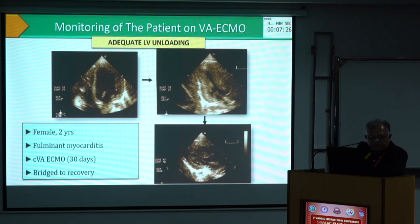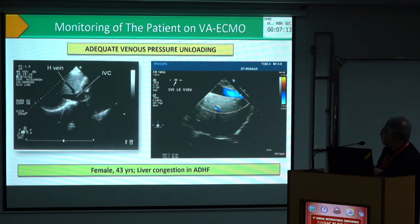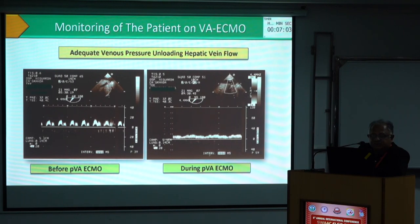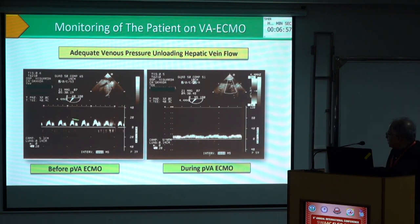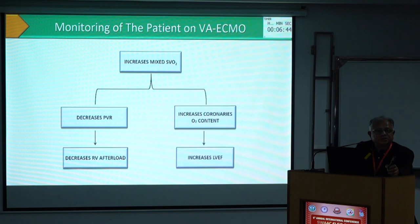This is the hepatic vein and IVC. You can look at the flow of the cannula and venous pressure, which should be adequate but not too much — otherwise you will see venous congestion and the IVC was not collapsing. Adequate venous pressure, unloading the hepatic vein flow: you can put a Doppler there and see it improves with adequate unloading. Mixed venous saturation helps in ventricular contractility and improving oxygen flow, and also decreases peripheral pulmonary vascular resistance, so right ventricular afterload is reduced and right ventricular unloading gets better.